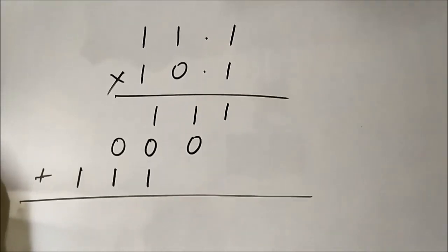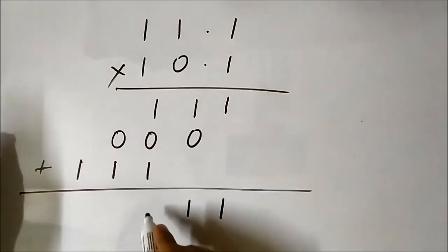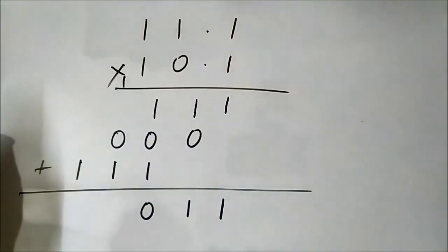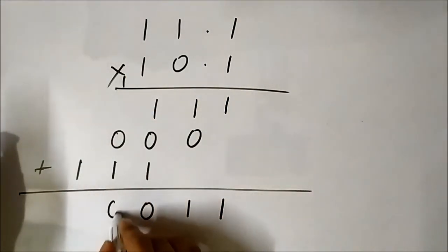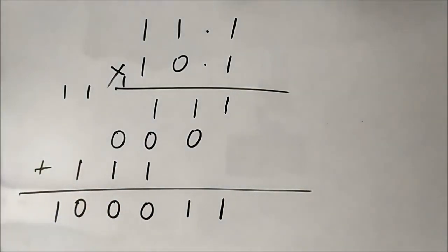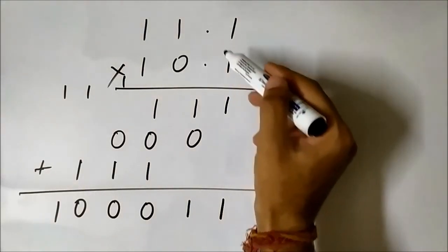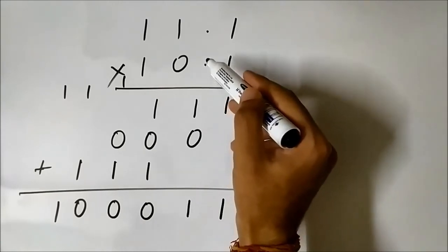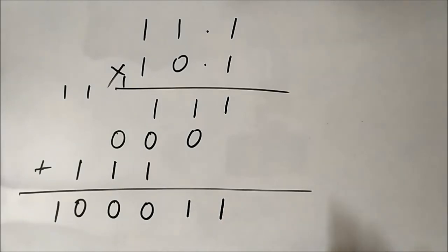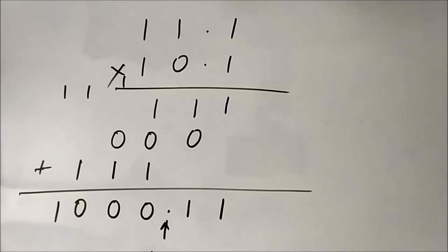Adding: 1 comes straight down; 1+0 = 1; 1+1 = 0 with a carry; again 1+1 = 0 with a carry; again 1+1 = 0 with a carry, which comes straight down giving 1 0. Now, similar to the general rule for decimal multiplication, since each multiplicand has 1 bit after the binary point, we place the binary point after a total of 2 bits. The result is 1 0 0 0 . 1 1.